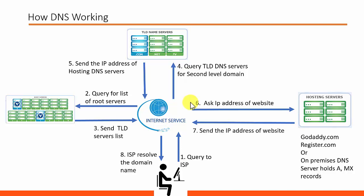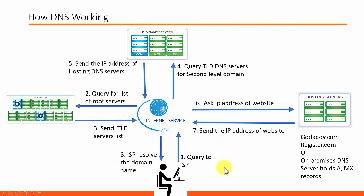In step 6, the local DNS server asks for the IP address from the hosting server. If you are visiting itproguide, then this query will go to Wix name server, and Wix will send back the IP address of the website. In the next step, the local DNS server will forward it to the client, and the client will make a connection with the website. This is how DNS actually works.